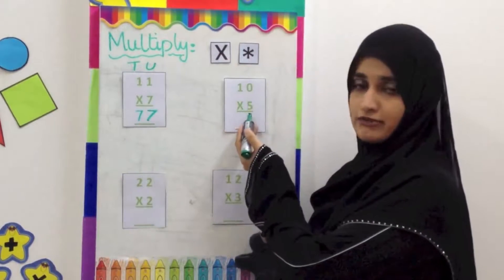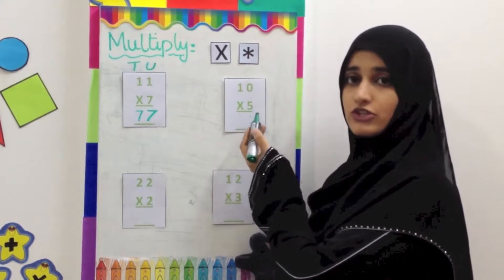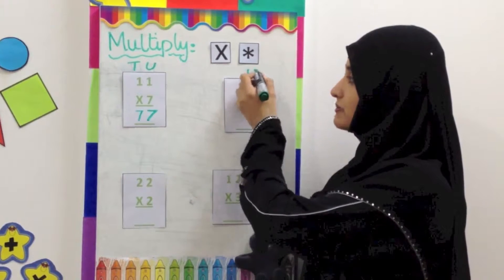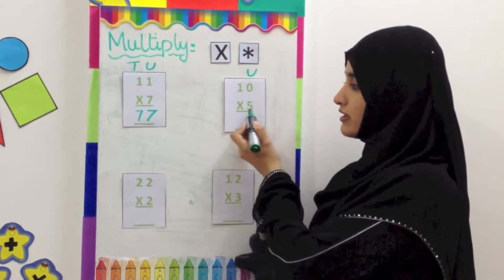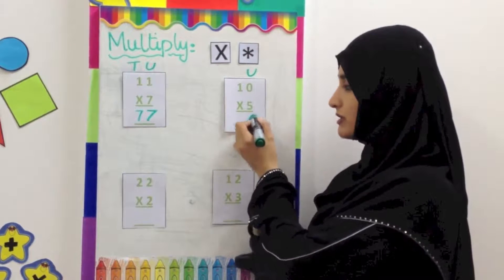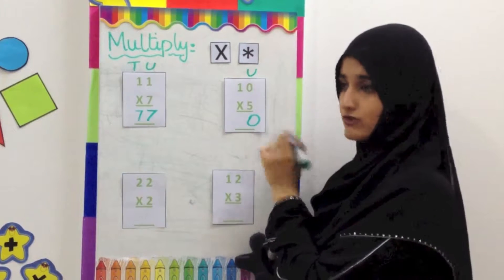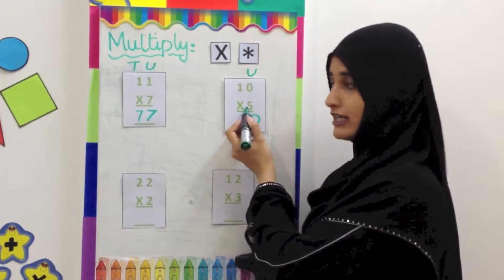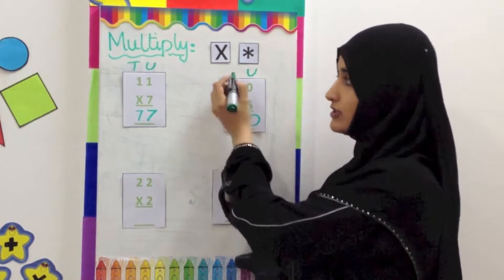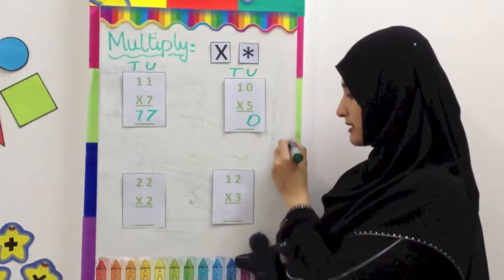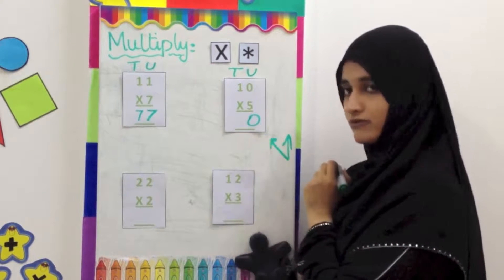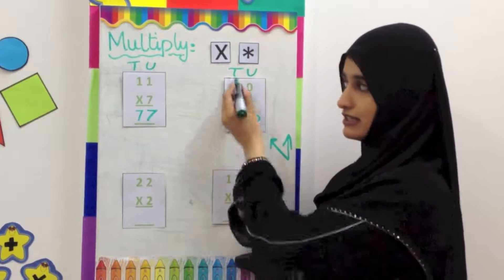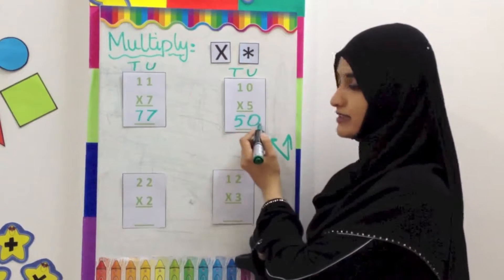10 multiplied by 5. To solve this question, the first thing you do is take the number 5 and multiply it with the number in the units place, which is 0. 5 zeros are 0. Whenever you multiply any number with 0, the answer is always 0. So the answer is 0 in the units place. Now you are going to multiply 5 with the 1 which is in the tens place. 5 ones are 5. 5 comes here in the tens place. The answer is 50.